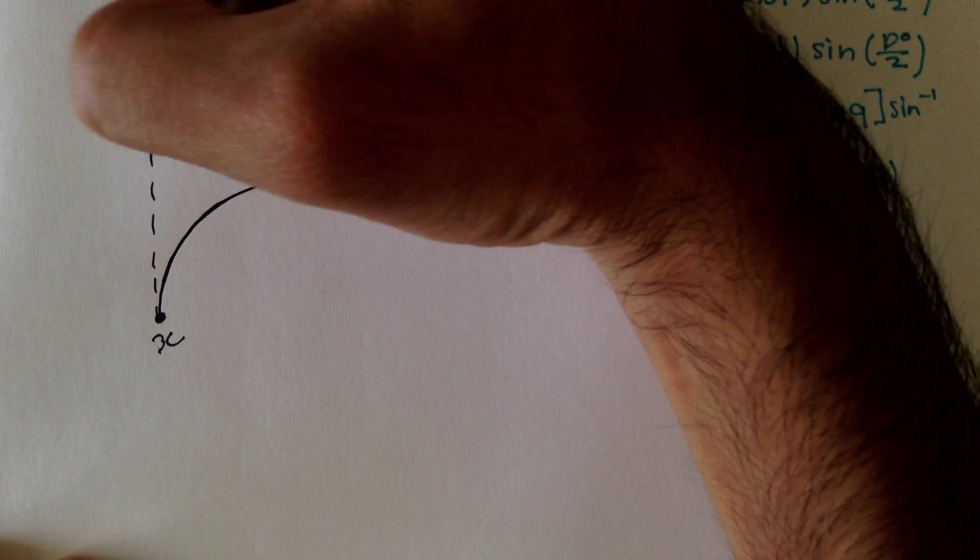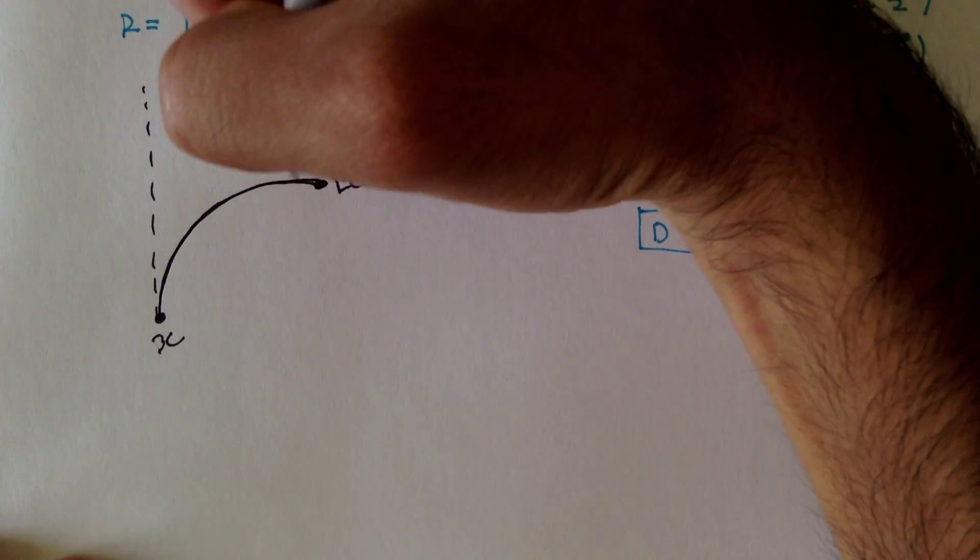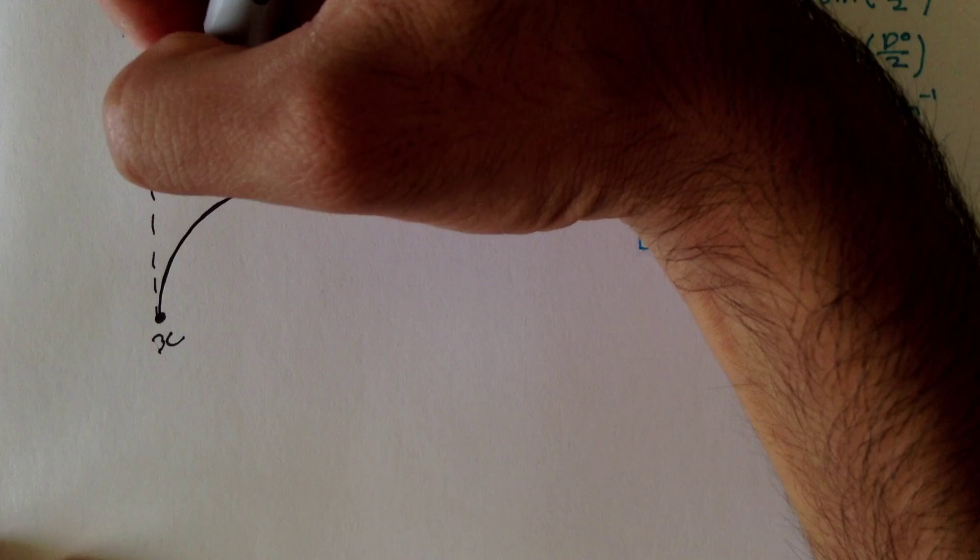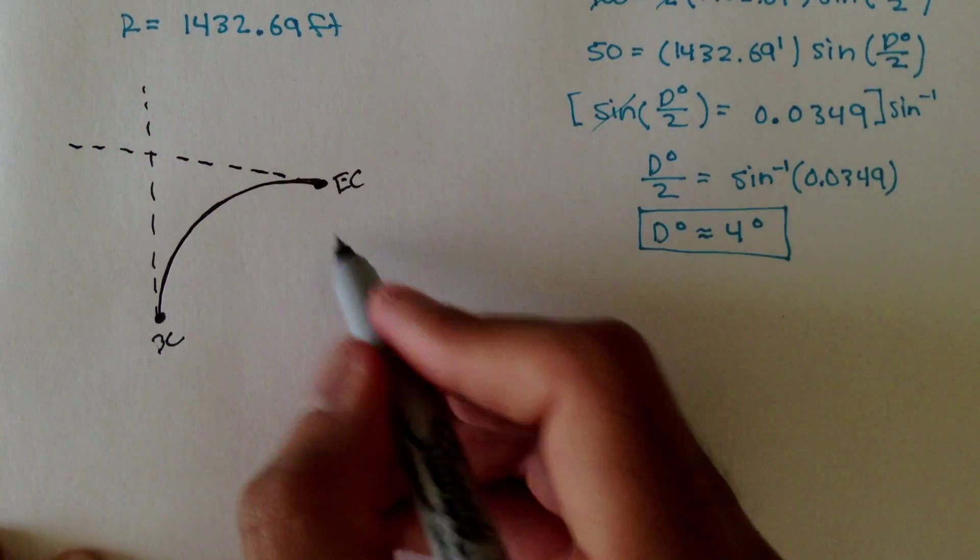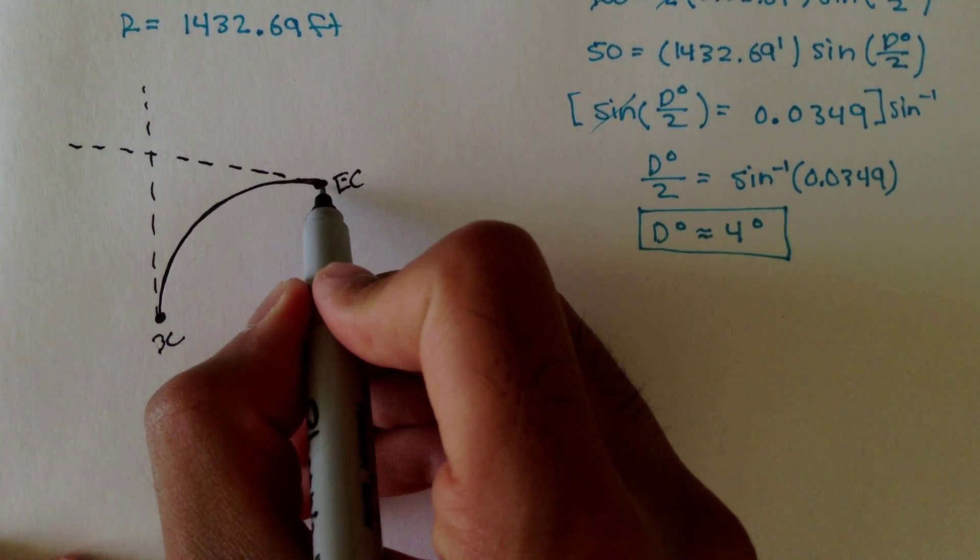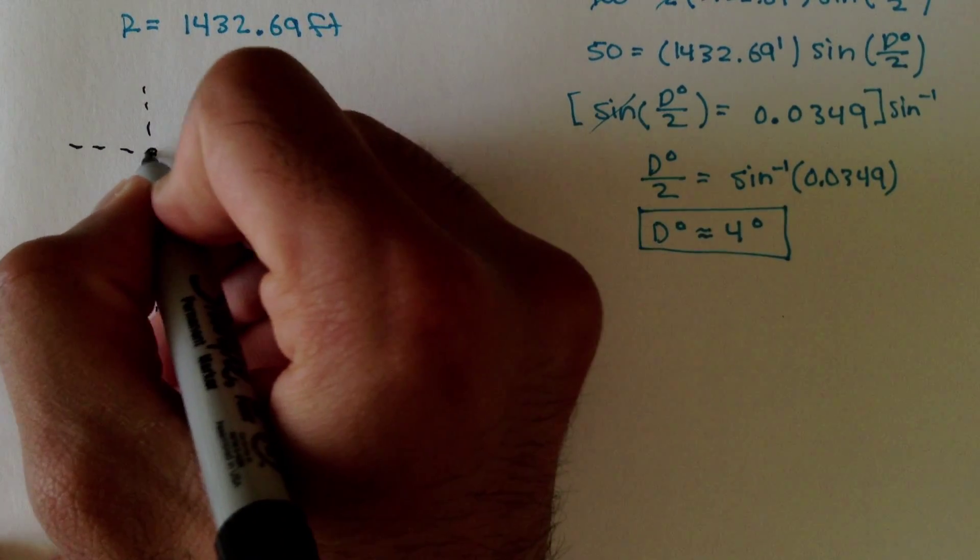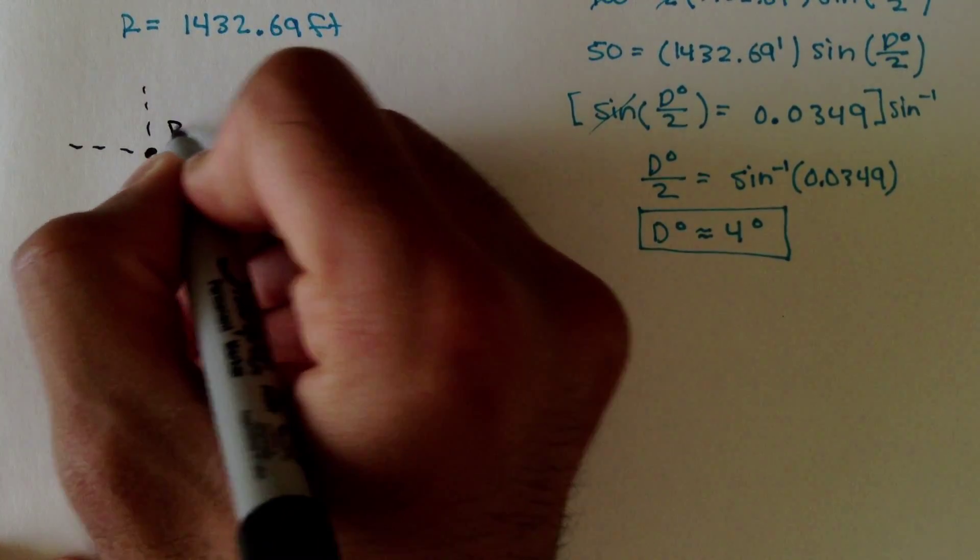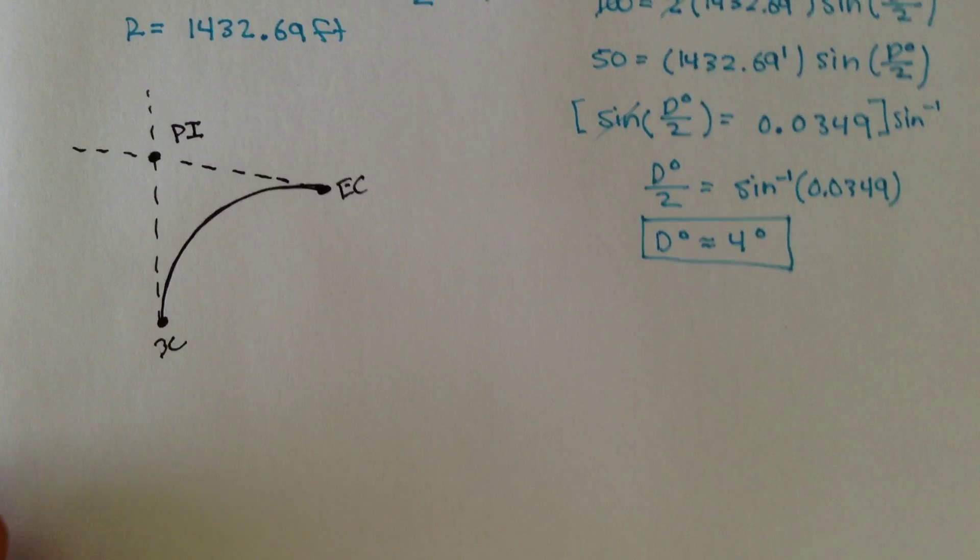This is the T distance from BC, and this is the tangent distance from EC. And the point where these tangents intersect is called the point of intersection.